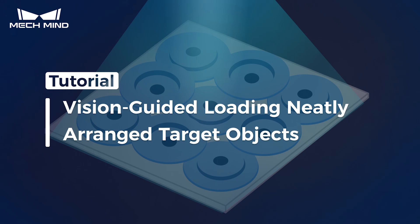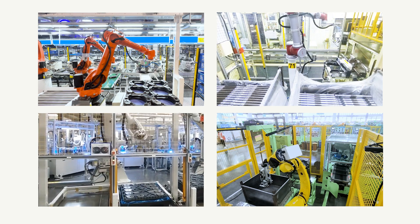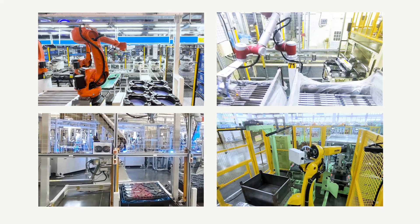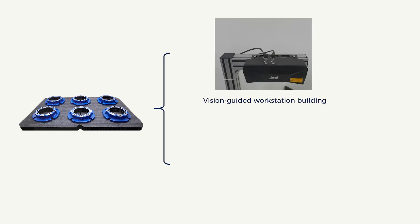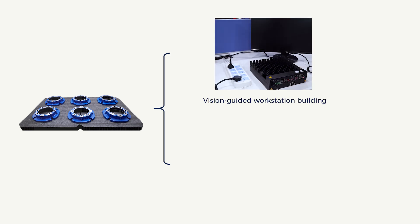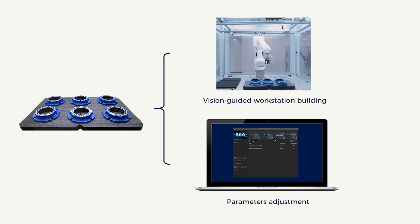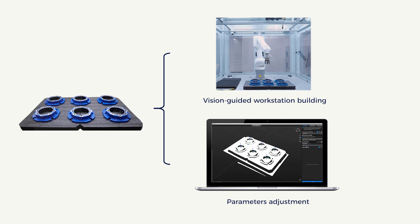This video provides an overview of the tutorial for structured picking. Taking the example of picking housings on pallets, it demonstrates how to build a vision-guided robot workstation and use the built-in application template in the software to configure relevant parameters, ultimately achieving robot picking.